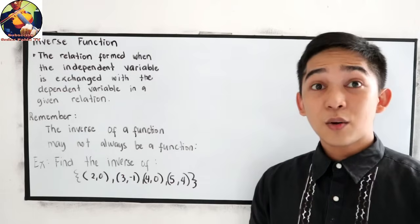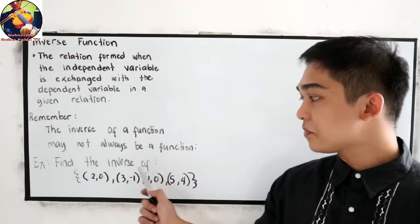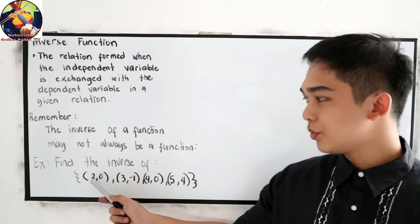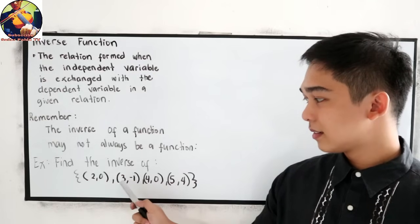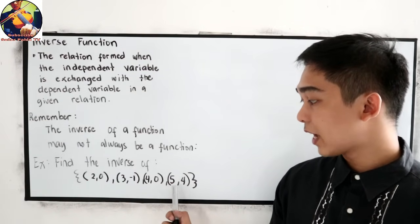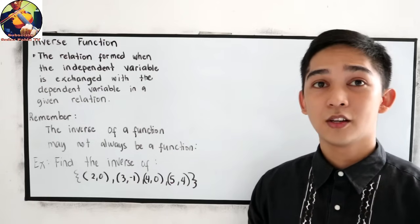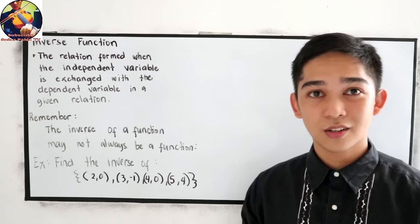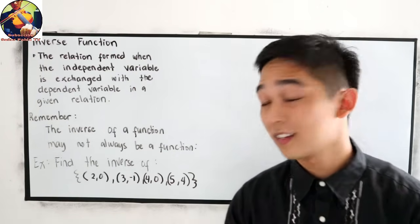Now let us have this example. Find the inverse of the ordered pairs: (2, 0), (3, -1), (4, 0), and (5, 4). To find the inverse, we just interchange the value of x with the value of y.